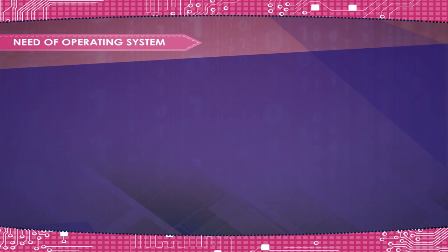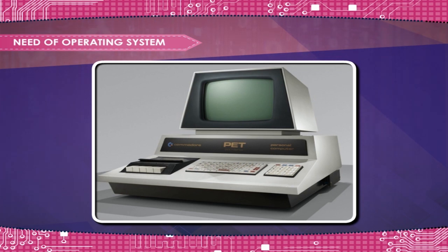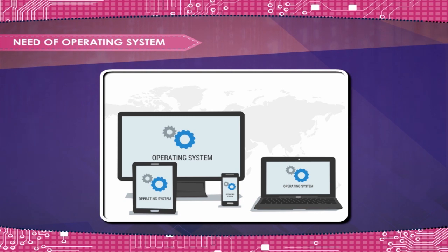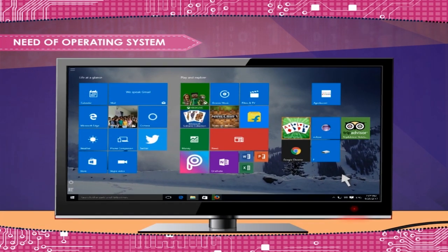Need of Operating System. In earlier days, users had to design the application according to the internal structure of the hardware. An Operating System was needed to enable the user to design applications without concerning the details of the computer's internal structure. It is an interface between the computer hardware and user.